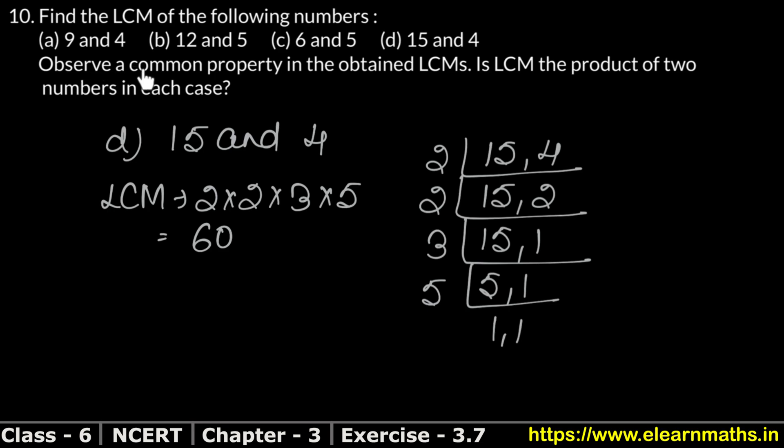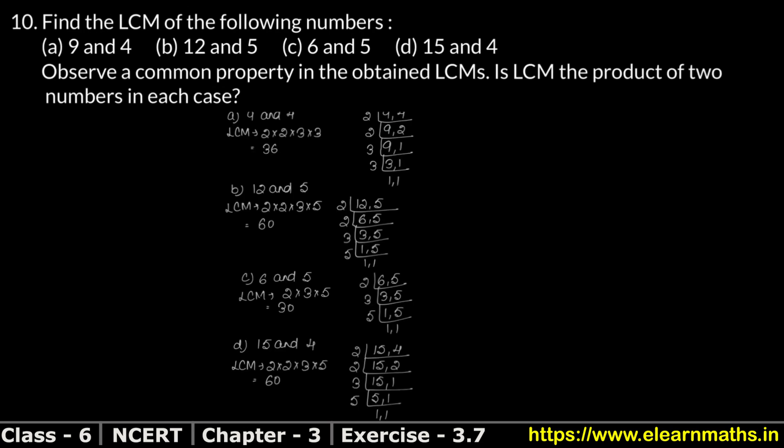But what is this asking? What is the common property in the obtained LCMs? So let's see. If you look, in A part we got 36. In this we got 60. C part has 30 and then 60. So if you see, all these are multiples of what? These can be called multiples of 6, multiples of 3, multiples of 2. We can say anything.